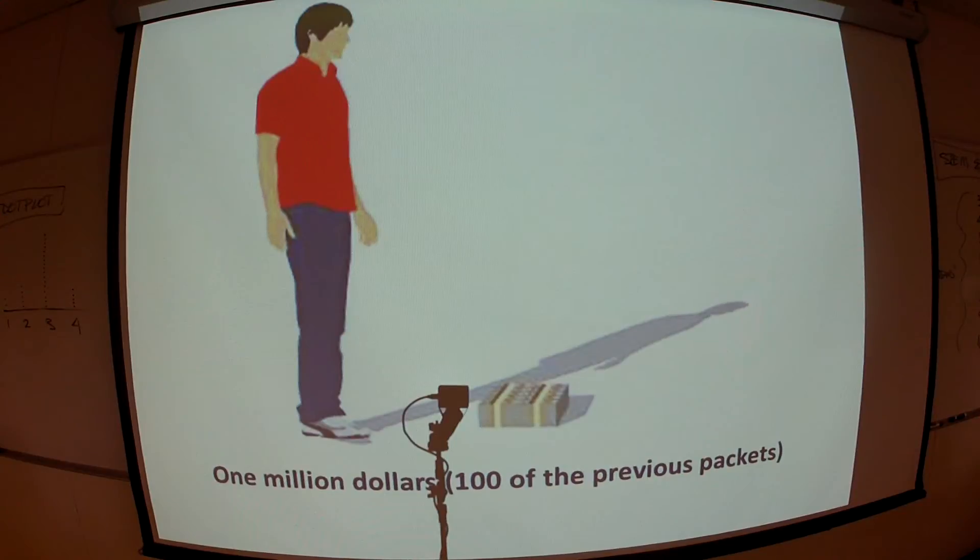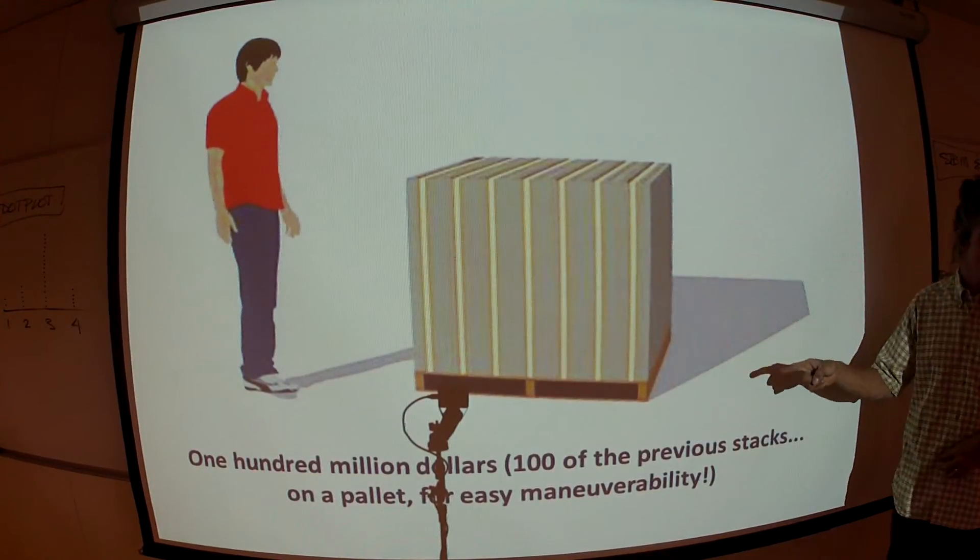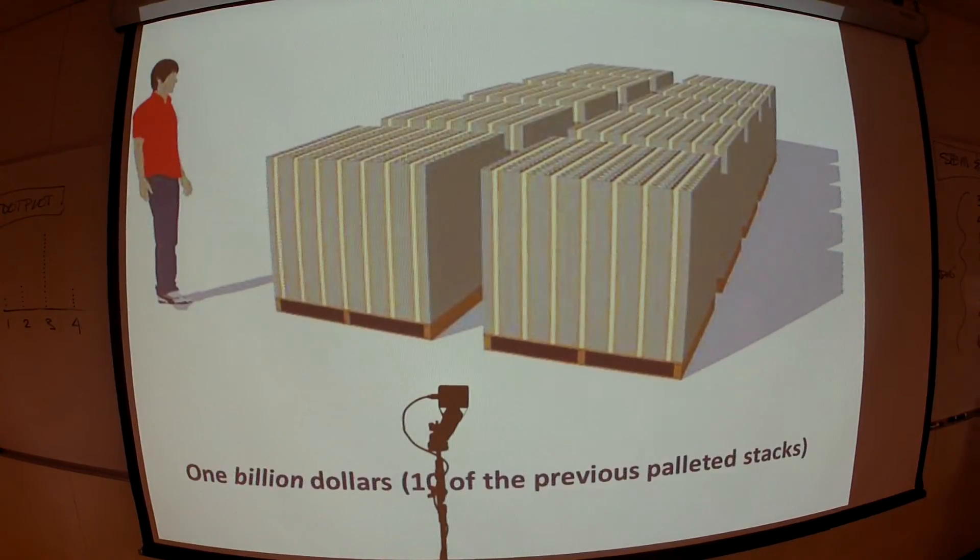So there's $1,000,000. If we put a whole bunch of those on a packet, on a pallet, we get $100,000,000. So there's a dude. Imagine a pallet. I know pallets are slightly different, but imagine your average pallet. There's $100,000,000. If I put 10 of those together, I get a billion dollars. That's a billion. Okay. So let's go backtrack a little bit. There's a million.